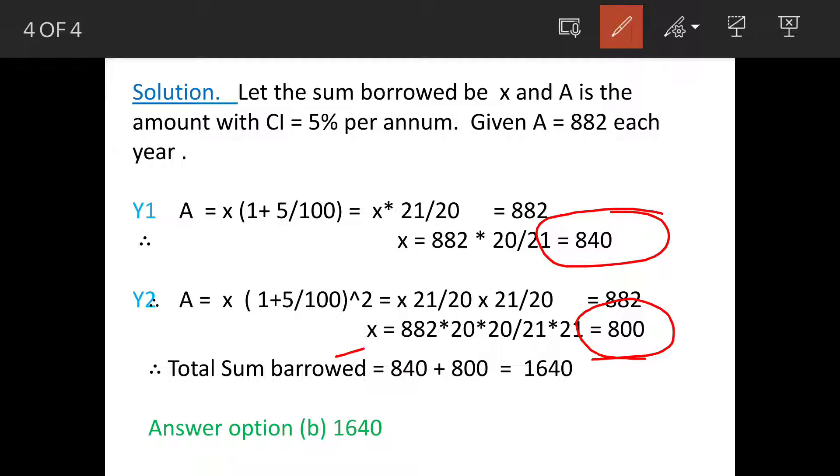So the total sum borrowed will be 840 plus 800, which equals 1640. So our answer is option B: 1640.